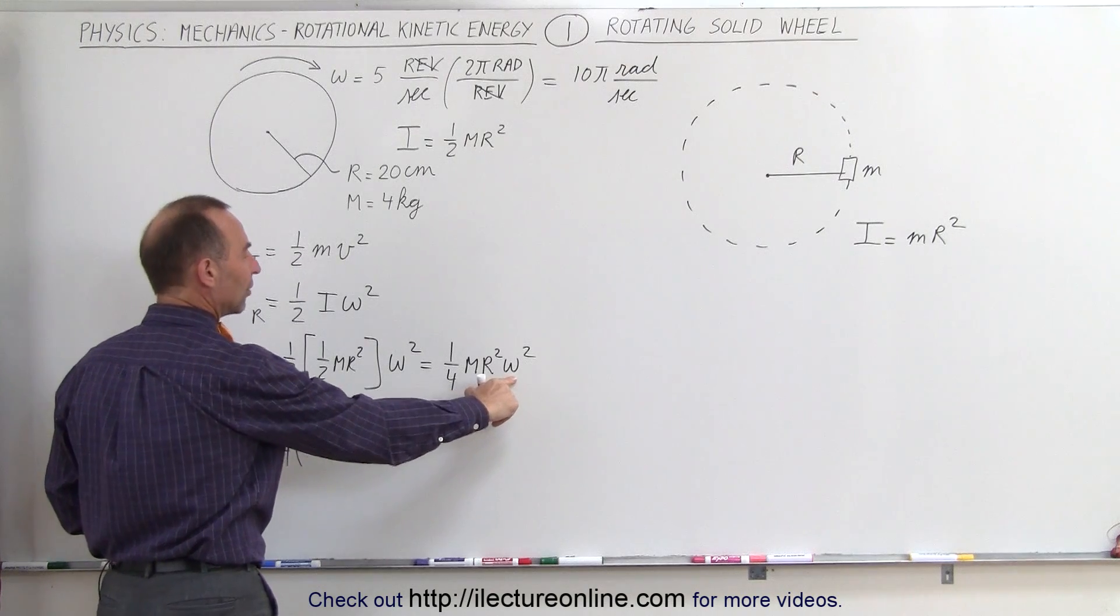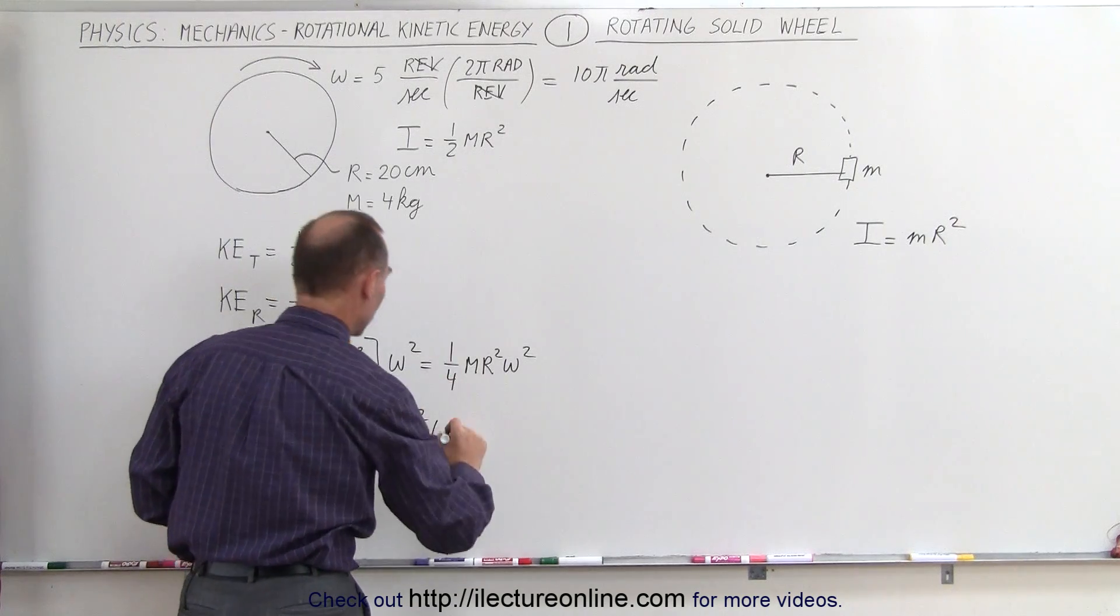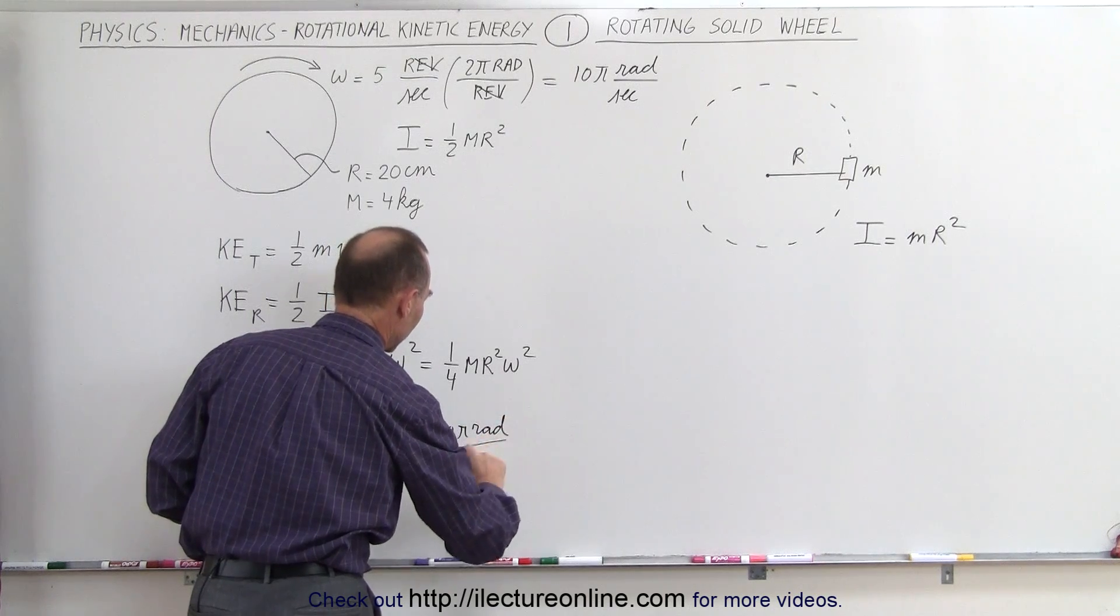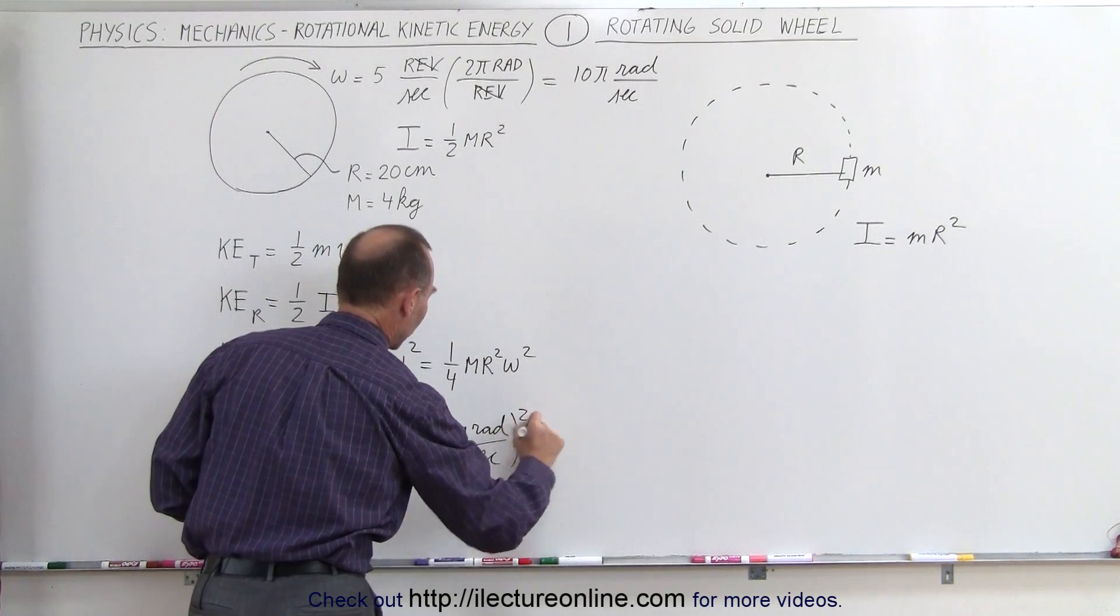And then we have ω² and ω is equal to 10π radians per second, and we have to square that as well.